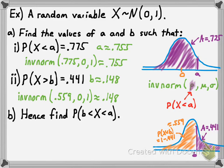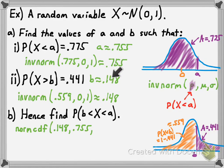Now I'm going to ask you to find the probability that x is between the values of b and a in this standard normal distribution. This goes back to using normal CDF. Whenever you're finding a probability using a normal distribution, use normal CDF. When you're given the probability and want to find the number greater than that value, use inverse norm. So here, we type norm CDF with lower boundary 0.148, upper boundary 0.755, comma 0, comma 1, and the probability comes out to approximately 0.216.